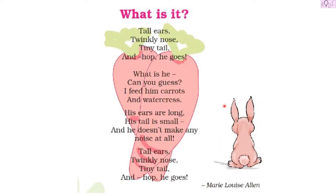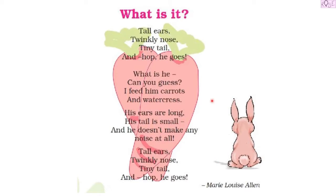The animal is a rabbit! Yes, you are right. The animal they are describing is the rabbit. Let us read the poem once again: tall ears, twinkly nose, tiny tail, and hop he goes. What is he? Can you guess? I feed him carrots and watercress. His ears are long, his tail is small, and he doesn't make any noise at all. Tall ears, twinkly nose, tiny tail, and hop he goes. The poet is Mary Louis Allen.